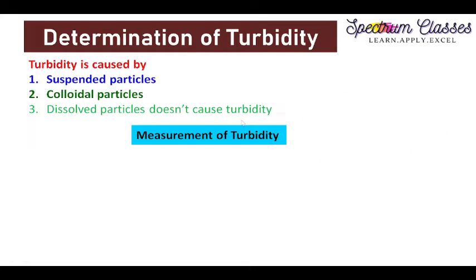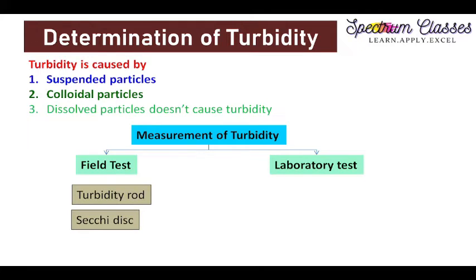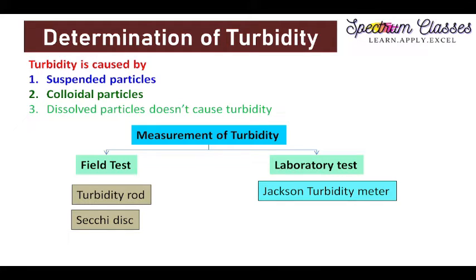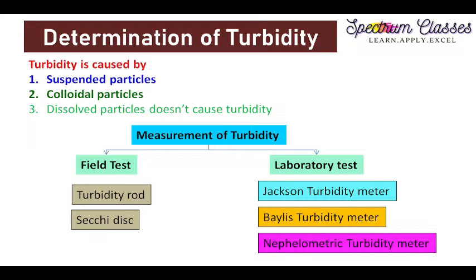Now, how to measure turbidity. There are two different settings: one is a field test and the other is a laboratory test. For field testing, we use a turbidity rod and a Secchi disk. In the laboratory, turbidity can be determined using the Jackson candle turbidity meter, the Hellige turbidity meter, and the nephelometric turbidity meter.